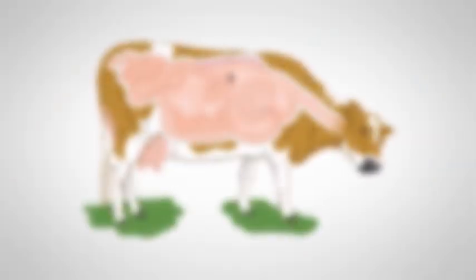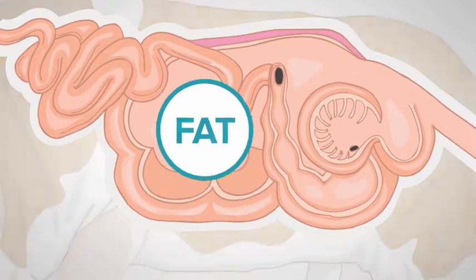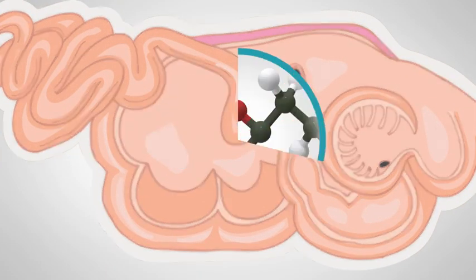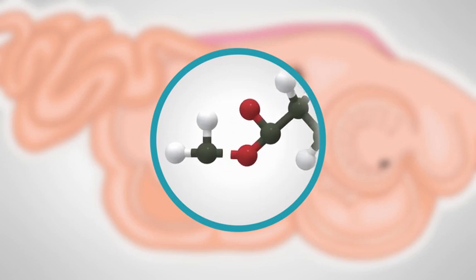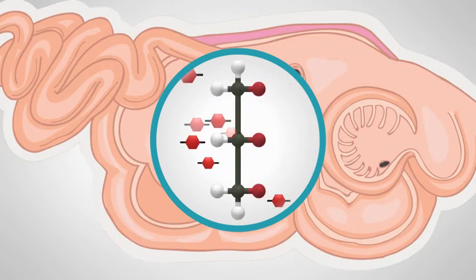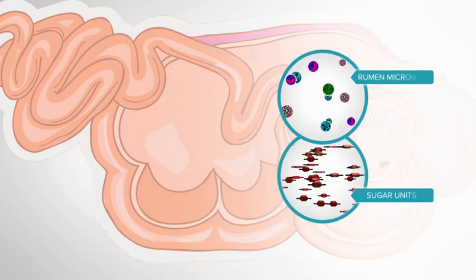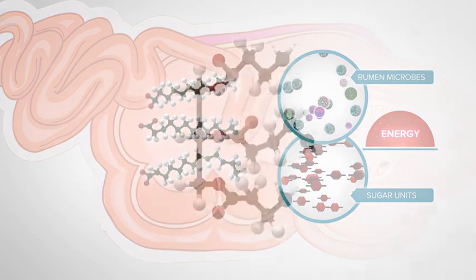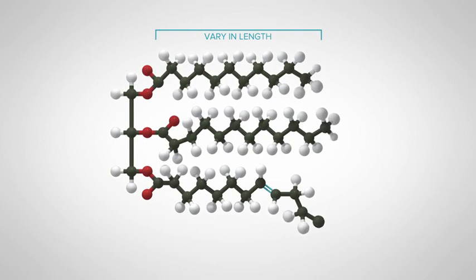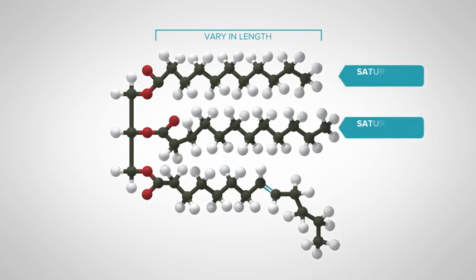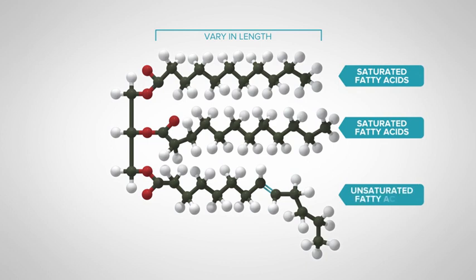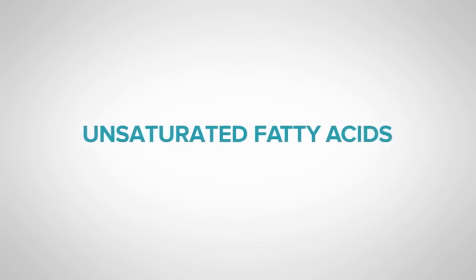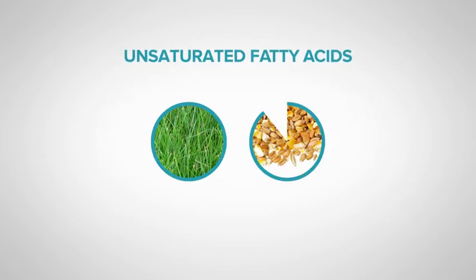So let's look at what happens inside the cow. When a cow eats a diet containing fat, the fat is rapidly hydrolyzed in the rumen. This means the bonds between the glycerol backbone and the fatty acids are broken. The sugar units in the glycerol backbone are used by the rumen microbes as an energy source, while the fatty acids are released into the rumen. These fatty acids can be different lengths and they can be either saturated or unsaturated. This is important as it determines how they are processed in the rumen. We'll start with the unsaturated fatty acids, as these are the predominant fatty acids found in forages and grains.